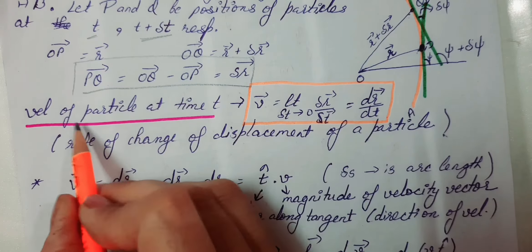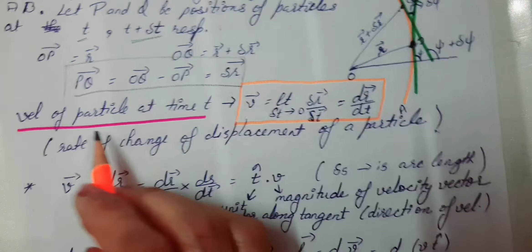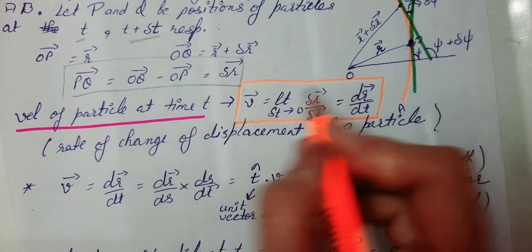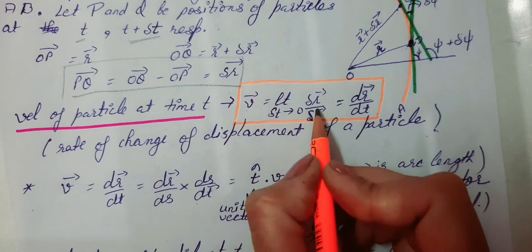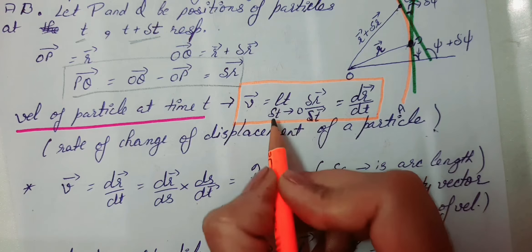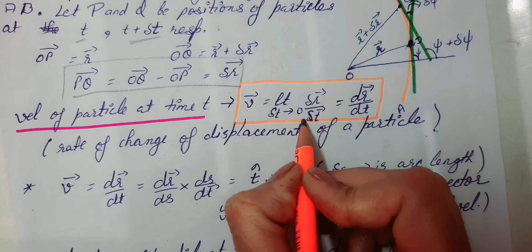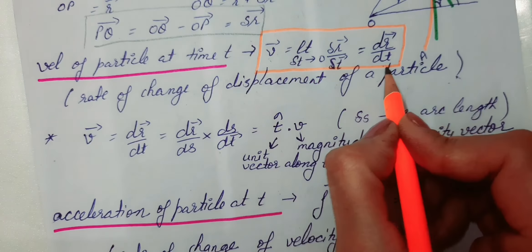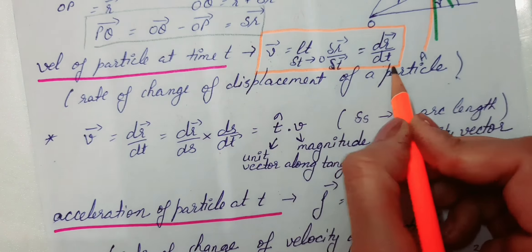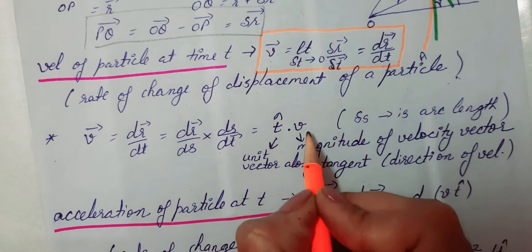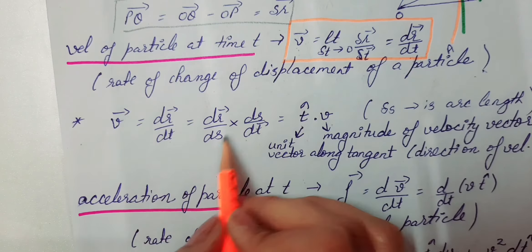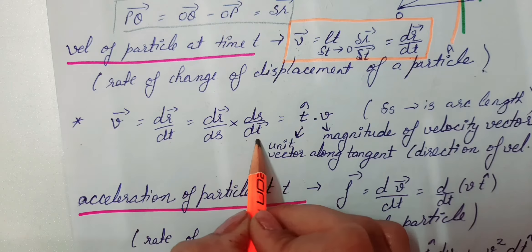Now, velocity of a particle की definition क्या होती है? Velocity of a particle is the rate of change of displacement. इसलिए velocity का formula आएगा: limit delta T tends to 0 of delta R by delta T. Therefore, velocity का formula बना DR by DT. अब DR by DT को direction और magnitude के रूप में लिखना चाहें तो by chain rule: DR by DT = DR by DS into DS by DT.